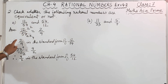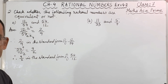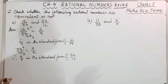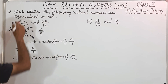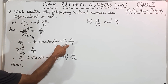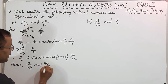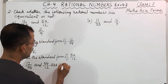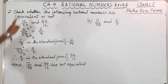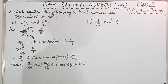Now you see both the standard forms: 2 by 9 and 9 by 2. Are they same? They are not same; they are different. So what I will say? They are not equivalent. Hence, 12 by 54 and 54 by 12 are not equivalent.